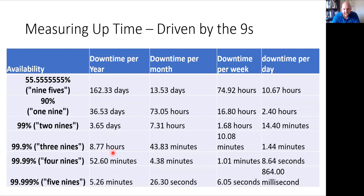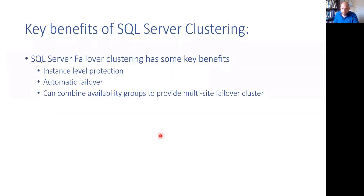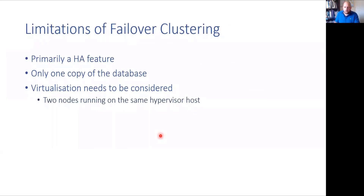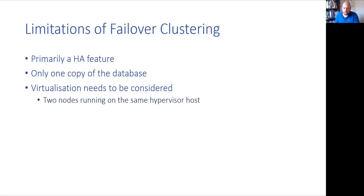Looking back at the uptime table — three nines gives eight and three-quarter hours of downtime per year. With eight hours downtime a year, if you need to do things like patching, you can patch the non-active nodes first, then failover to those previously passive nodes and patch what was the active node. It doesn't help directly with RTO and RPO, but it does help hit your service level agreement uptime targets.